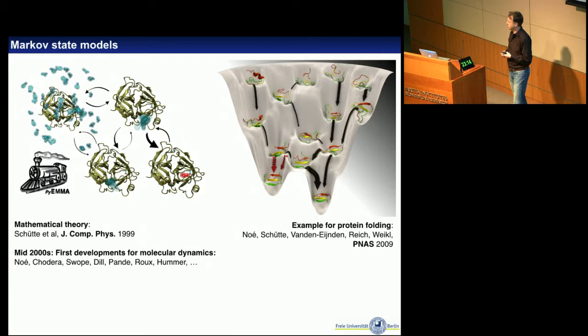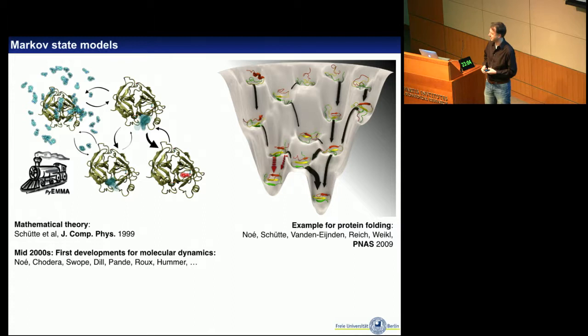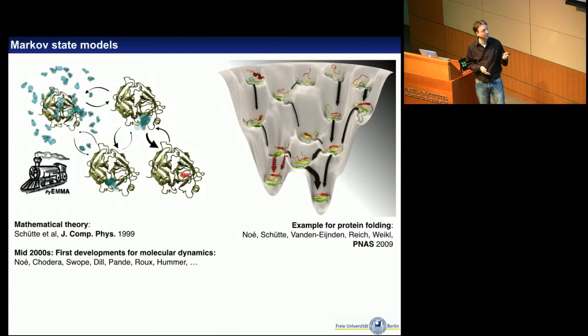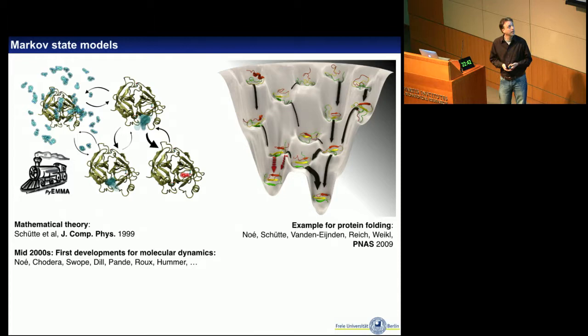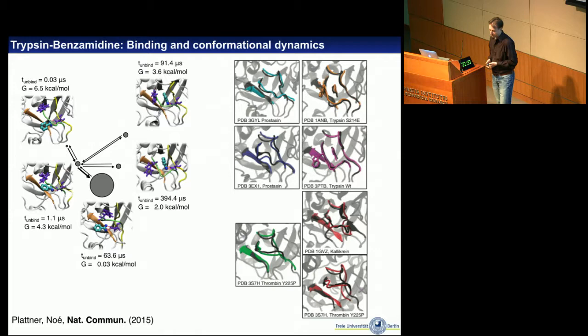In the mid-2000s, several people — starting with a small group — I met Ken Dill at a conference, who brought us all to San Francisco, and then John, Bill Swope, Nina Singal and I met and talked about these things and started working in this field. Initially on mostly peptide dynamics, small protein folding, reconstructing folding pathways for proteins — because that's what we could do at the time. Later, computers got more powerful, methods got better, and we could do things like ligand binding and unbinding.